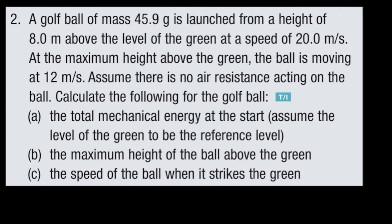A golf ball of mass 45.9 grams is launched from a height of eight meters above the level of the green at a speed of 20 meters per second. At the maximum height above the green, the ball is moving at 12 meters per second. Assume there is no air resistance acting on the ball. They want us to calculate: the total mechanical energy at the start, the maximum height of the ball above the green, and the speed of the ball when it strikes the green.